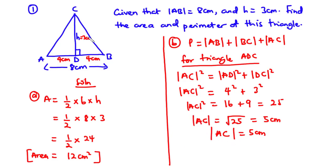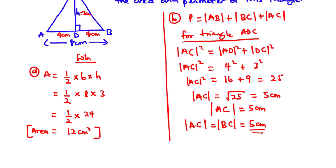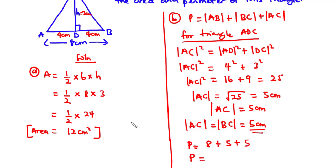Now AC is equal to BC. So if AC is 5 centimeters, then BC is also 5 centimeters. Therefore the perimeter is AB plus BC plus AC, which is 8 plus 5 plus 5. That gives 18, so the perimeter of this triangle is 18 centimeters.